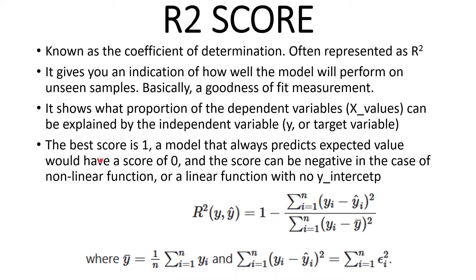So the best score is 1 and a model that always predicts expected values would have a score of 0. And the score can be negative in the case of a non-linear function.